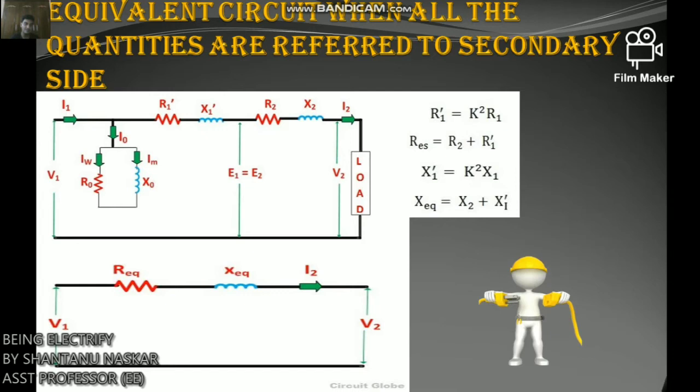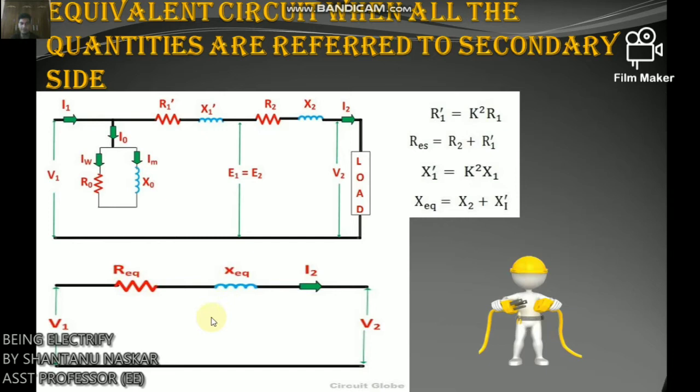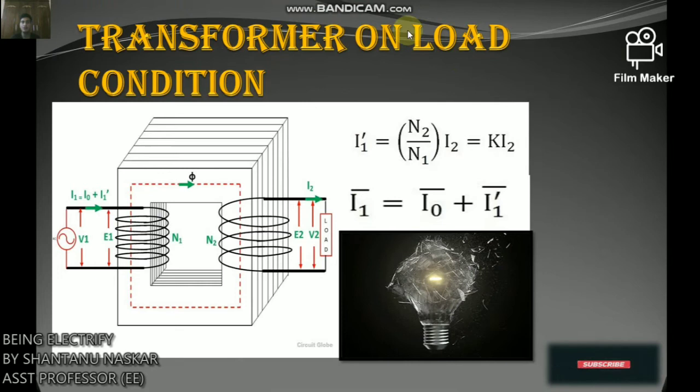Further simplification of the equivalent circuit can be done by neglecting the parallel branch consisting of R0 and X0. This gives the simplified equivalent circuit diagram of the transformer. Next, we will discuss transformer on-load condition.